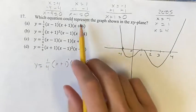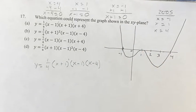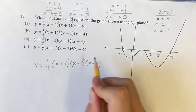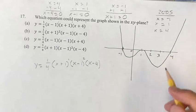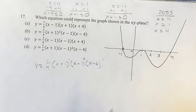x minus 1 corresponds with x is equal to 1, which is this one right here, where it doesn't cross through, it bounces off of it. So that's going to be an even, so that's going to be squared. And then x is equal to 4 corresponds with x minus 4, that crosses through, so that's just going to be a 1.